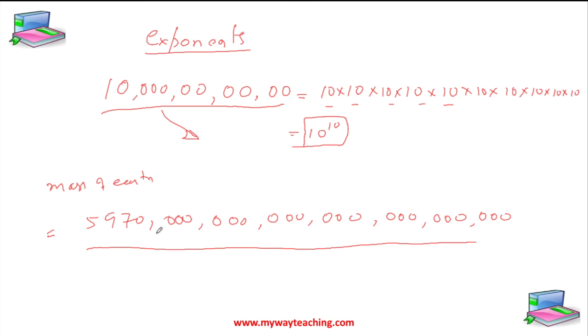It's very difficult to read or write this number. The best option is, we know how many zeros? 1, 2, 3, 4, 5, 6, 7, 8, 9, 10, 11.